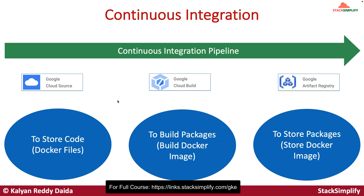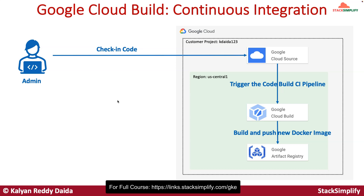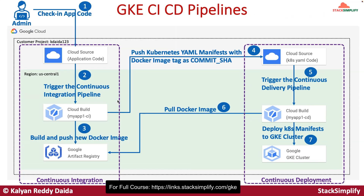From the continuous integration demo, we will use GitHub repositories as Google Cloud Source repositories. For building packages, we will use Google Cloud Build. For storing Docker images, we will use Google Artifact Registry. We will build a continuous integration pipeline. After that, we will also implement a continuous delivery pipeline in combination with the CI pipeline — meaning whenever you check in app code, it automatically builds a new Docker image and deploys that image to your Kubernetes cluster. The entire CI/CD flow — GitHub-style CI/CD — is implemented in demos 57 and 58.